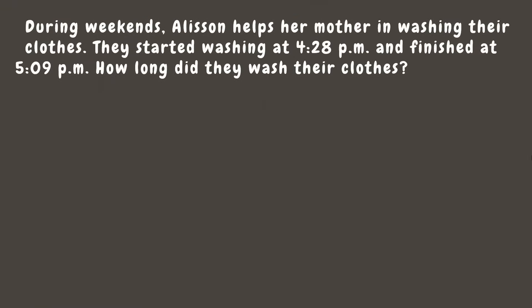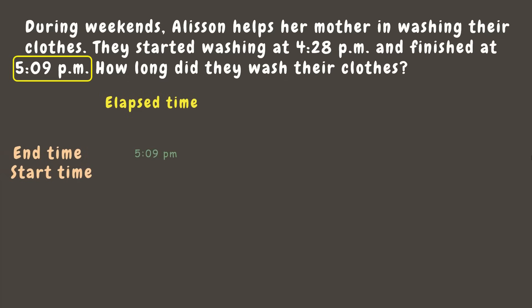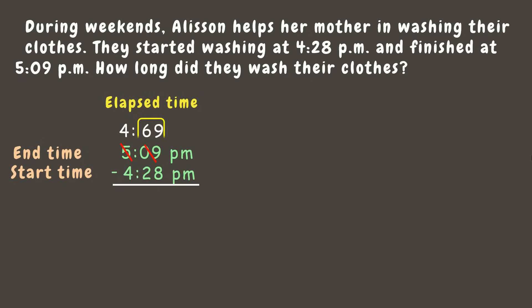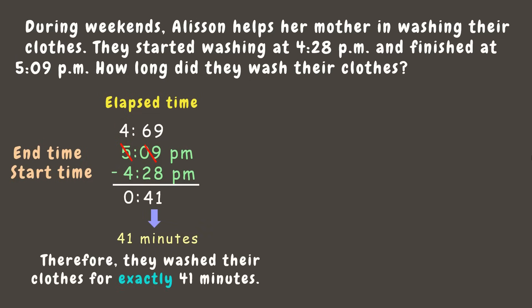During weekends, Allison helps her mother wash clothes. They started at 4:28 PM and finished at 5:09 PM. To find elapsed time, subtract start from end: 5:09 PM minus 4:28 PM. Since 9 is smaller than 28, borrow 1 hour from 5, making 5 become 4, and add 60 minutes to 9, giving 69. Then 69 minus 28 is 41, and 4 minus 4 is 0. They washed for exactly 41 minutes.